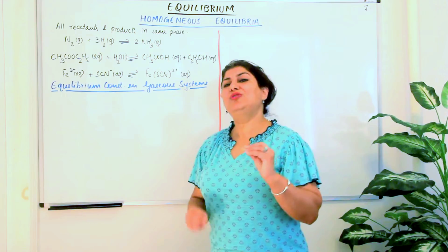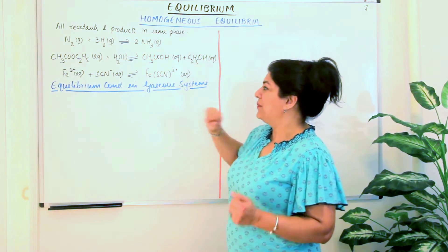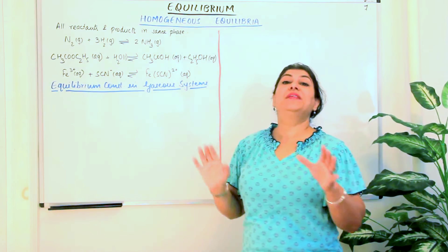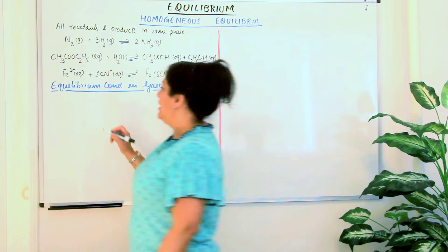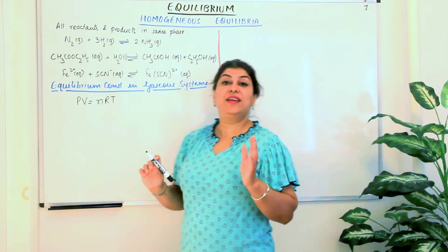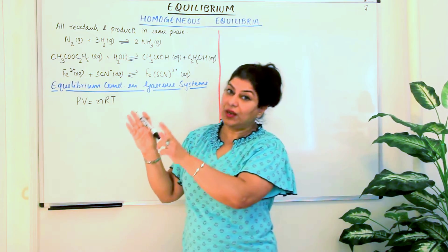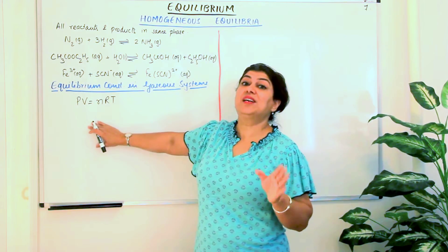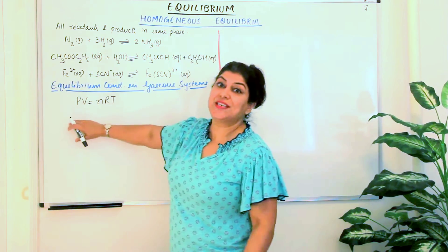Having understood this, let us now understand how we apply our knowledge of equilibrium constant, and how the equilibrium constant can be affected by this aspect. If we study equilibrium constant in gaseous systems — that is, a homogeneous system where all reactants and products are gaseous — we know from states of matter that for an ideal gas, the ideal gas equation is PV = nRT. The equilibrium constant KC equals the product of the concentrations of the products divided by the product of the concentrations of the reactants, each raised to their respective stoichiometric coefficients — that is, in terms of molar concentrations.